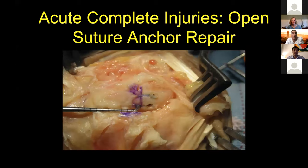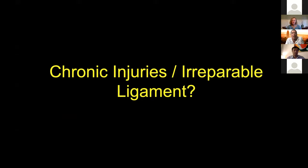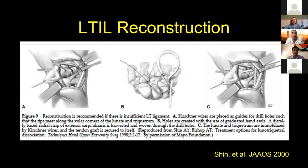For acute complete injuries, a straightforward suture anchor repair is very useful on the ulnar side as well as the scapholunate side. For chronic injuries where the ligament is no longer reparable, a reconstruction described by Bishop and Chin at the Mayo Clinic using a distally-based strip of the ECU to reconstruct the LT ligament is a very nice technique.